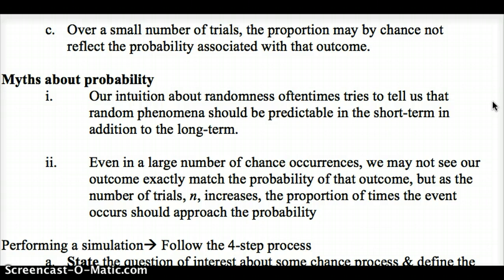Even in a large number of chance occurrences, we may not have our number be exactly 50-50. We may flip a coin 500 times and not get 250 heads, but it's likely we have a number very close to that, so the proportion is close to half. Let's take a look at what this looks like in a simulation.